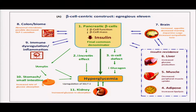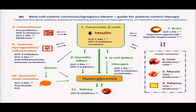This has led to the beta cell centric construct of the egregious 11 — pancreatic beta cells leading to reduced insulin, reduced incretin effect, alpha cell defect with reduced glucagon, hyperglycemia leading to glycosuria, the brain coming into the picture, insulin resistance in liver, muscle and adipose tissue increasing glucose, immune dysregulation, and the colon and stomach and intestine with reduced amylin. This is now being targeted by pathophysiological treatment of diabetes — metformin and TZDs for insulin resistance, glucagon for alpha cell defects, SGLT2 for kidney-mediated hyperglycemia, dopamine agonists, DPP-4 inhibitors, GLP-1 agonists, and pramlintide.